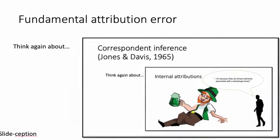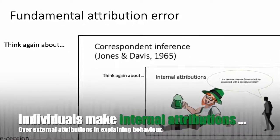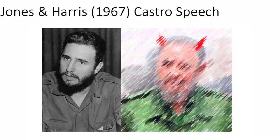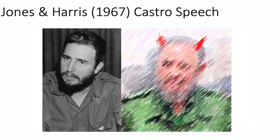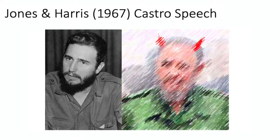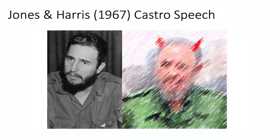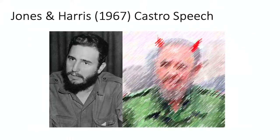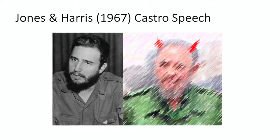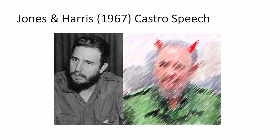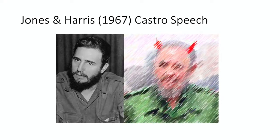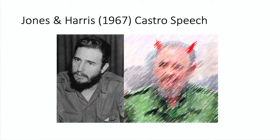Fundamental attribution errors are when individuals make internal attributions over external attributions in explaining behaviour. Jones and Harris, in 1967, showed participants the Castro speech, whereby participants read pro- or anti-Castro speeches and either chose freely or were forced to take a side. Those who were forced to take a side continued to believe in that position even when they had not freely chosen — thus, this is an attribution error.